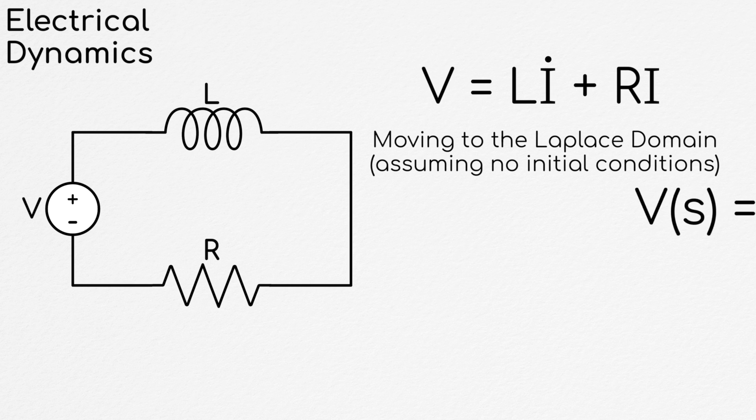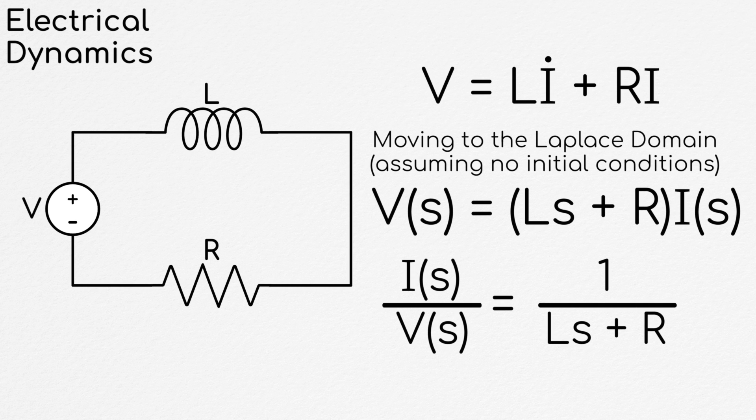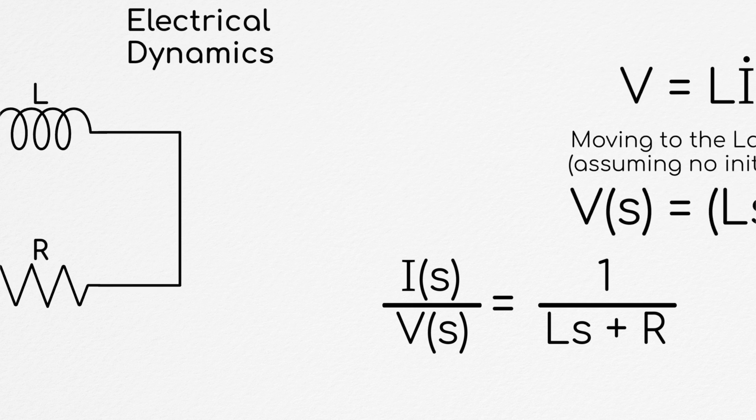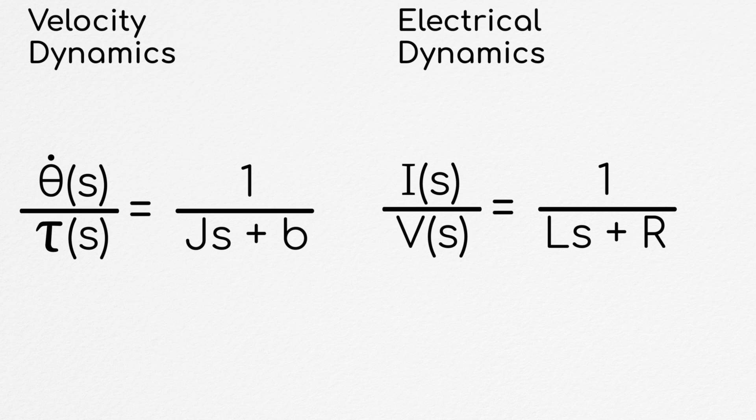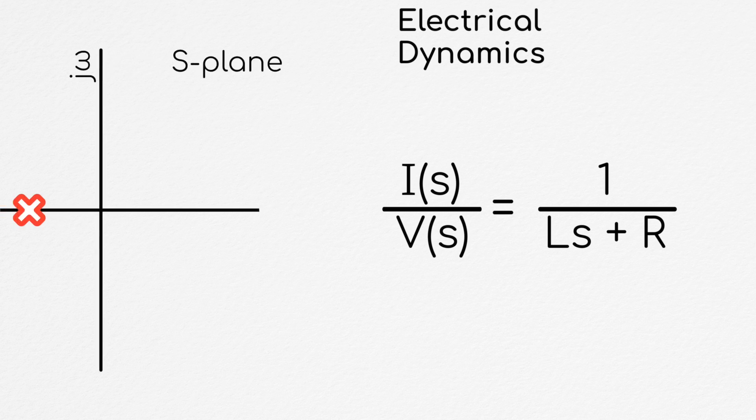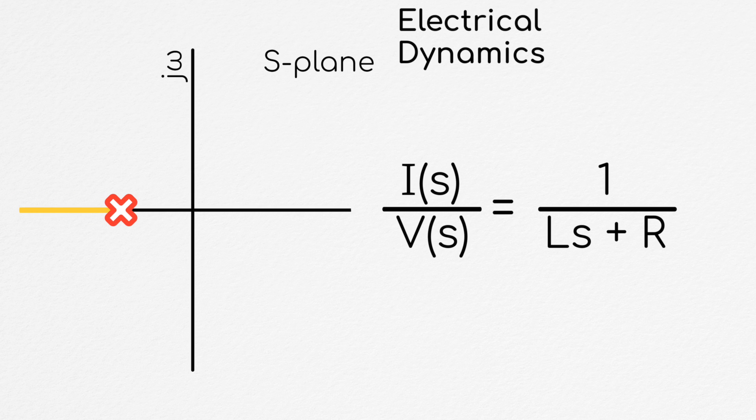So our simplified system can be described by the differential equation voltage equals L*I_dot plus R*I. Once again, taking this into the Laplace domain, our transfer function of voltage to current is thus 1 over L*s plus R. Now you may notice that this looks a lot like the torque to velocity system we just described. We have one real pole located at negative R over L.